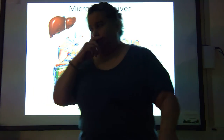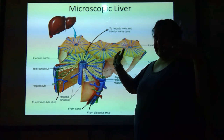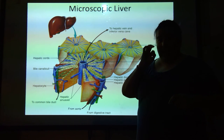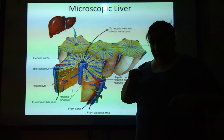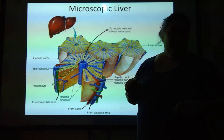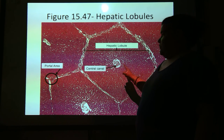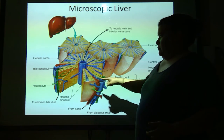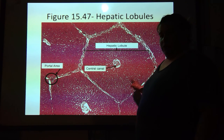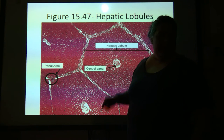Those bile canaliculi basically take the bile, and eventually — remember that bile duct we saw on the bottom half of the liver — that's where that's going. So see the hexagon? You've got the central canal — that's the central vein. You've got the lobule, and on every corner, you're going to have a portal area.